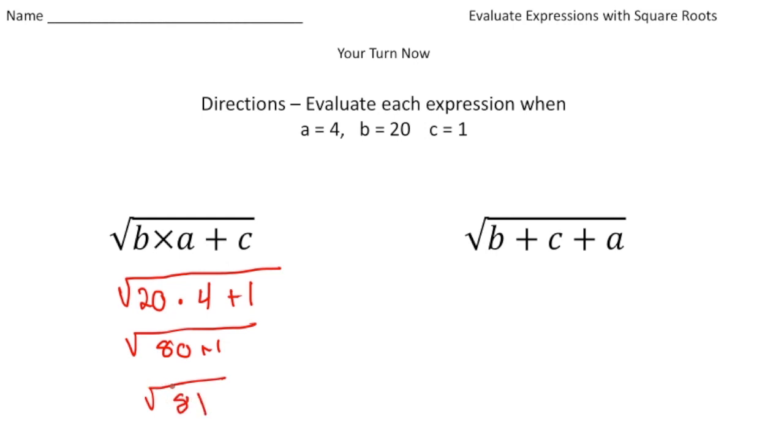Now the square root of 81 is going to be 9 times 9 is 81. But also negative 9 times negative 9 is 81. So we're going to say it's either plus or minus 9. And there's our answer.